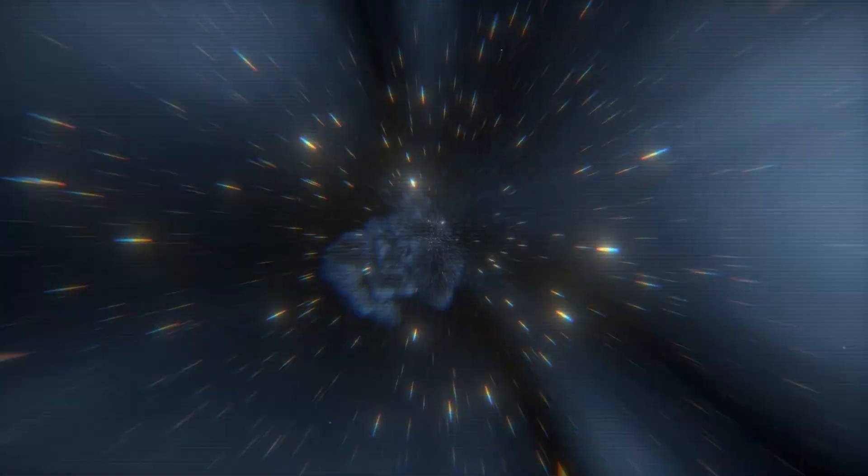But outside that surface, gravistars look and act like normal black holes. A black hole's event horizon is its point of no return, the boundary beyond which nothing, not even light, can escape.